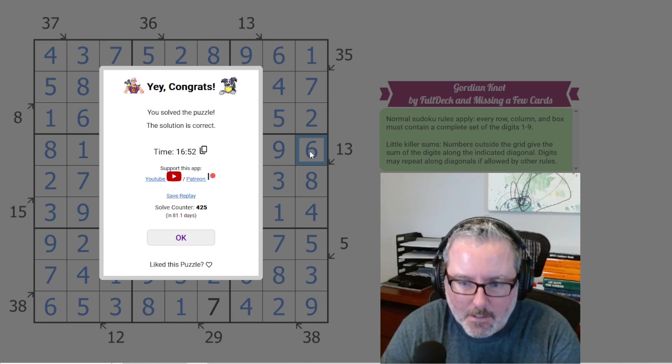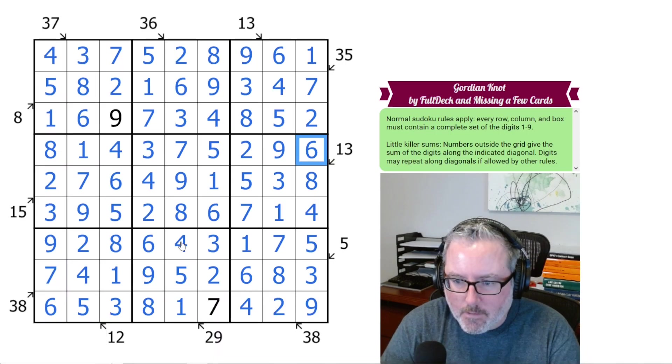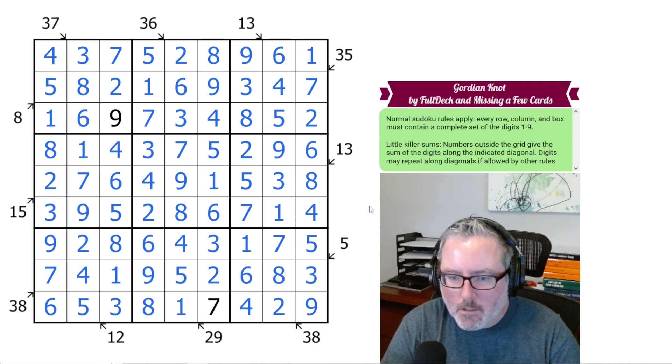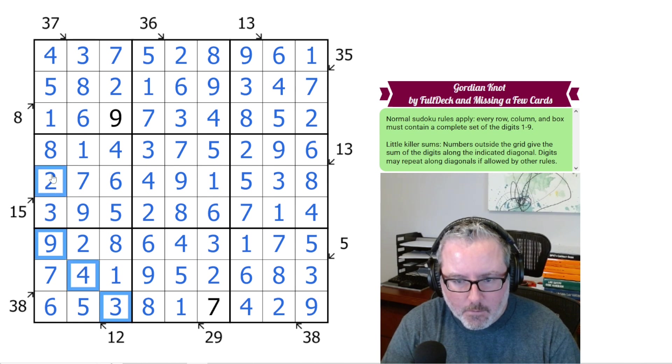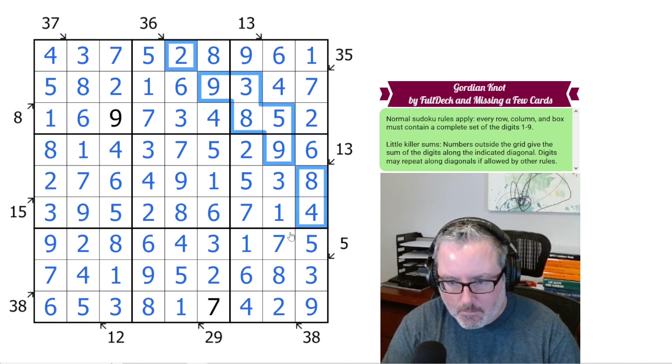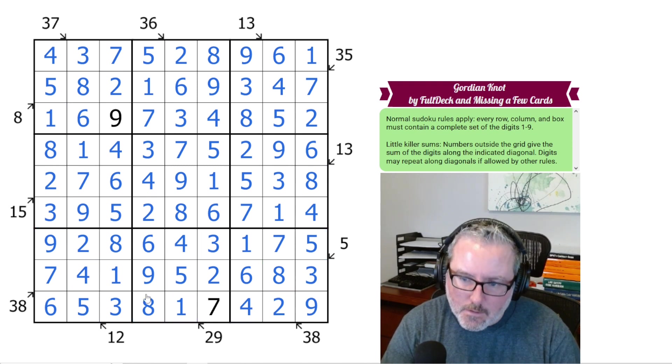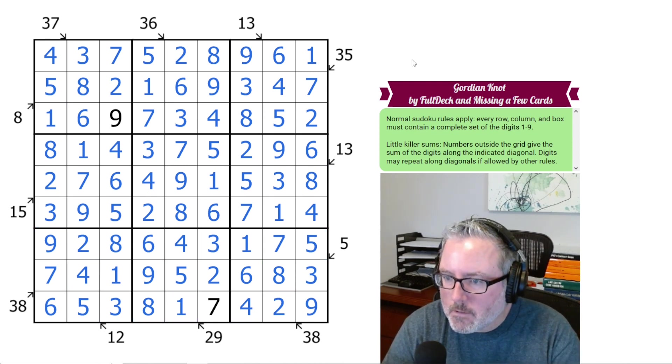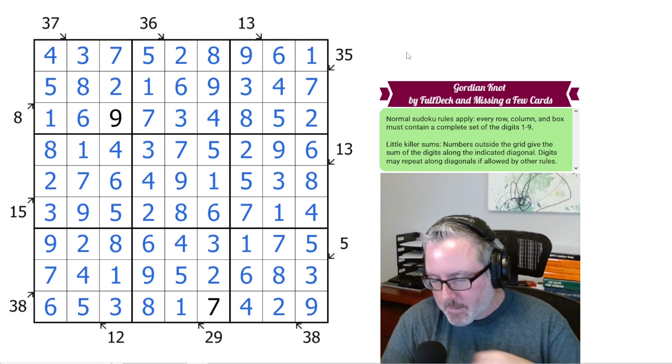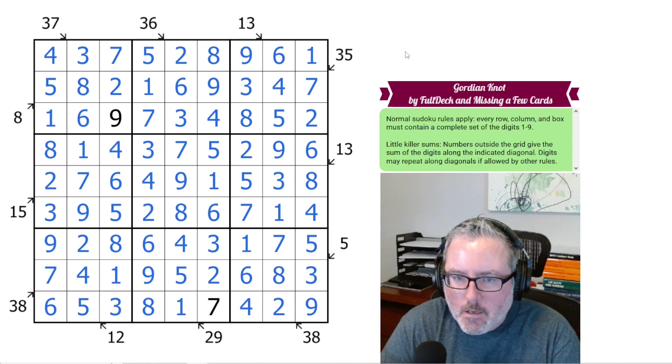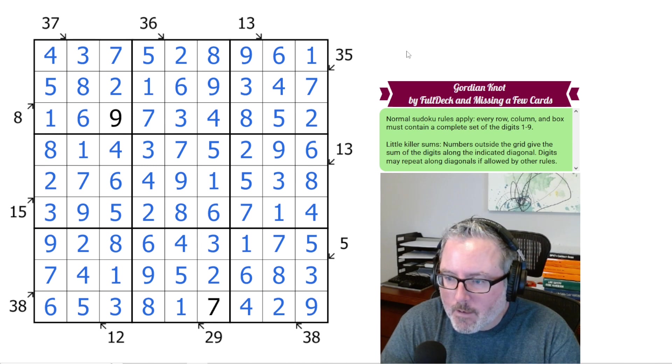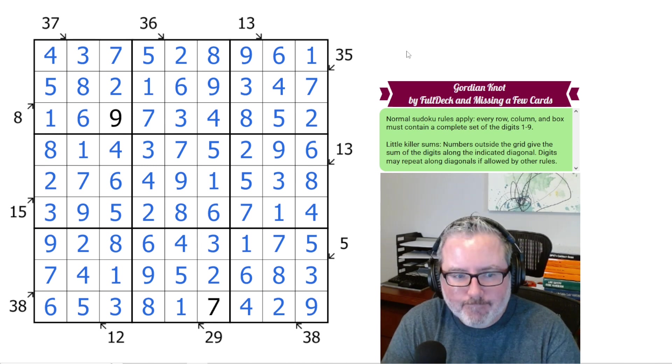Yay, congrats, you solved the puzzle. So a little under 17 minutes. Not bad. That was a nice little puzzle. Not a lot of rules, but it was pretty fun going around the grid to start. I think it started over here and kind of went around. And then we kind of just tightened in and tightened in on each little clue. Again, that was Gordian Knot by Full Deck and Missing a Few Cards. That was an excellent Sudoku. Hope you enjoyed the solve. And I'll see you next time. Have a good one.